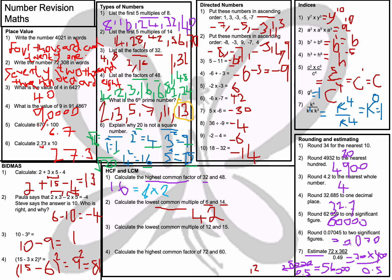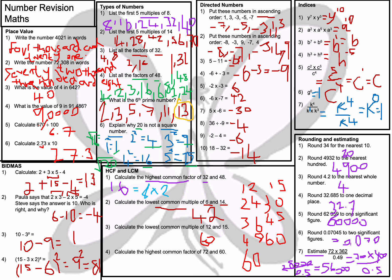The lowest common multiple of 12 and 15. Looking at the 15 times table: 15, 30, 45, 60. I stop at 60 because 60 is 5 lots of 12. So the answer is 60. Checking with the 12 times table: 12, 24, 36, 48, 60 — so 60 appears in both, therefore 60 is the lowest common multiple.